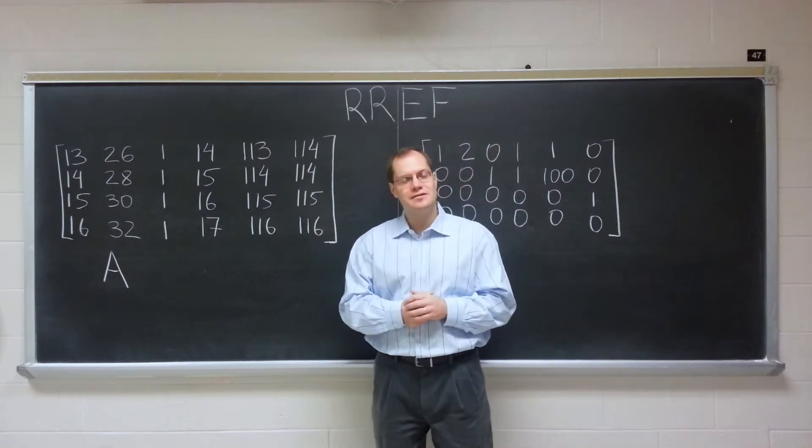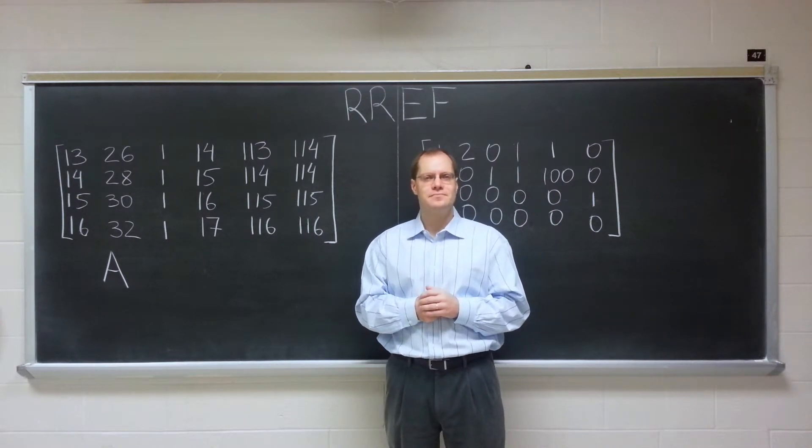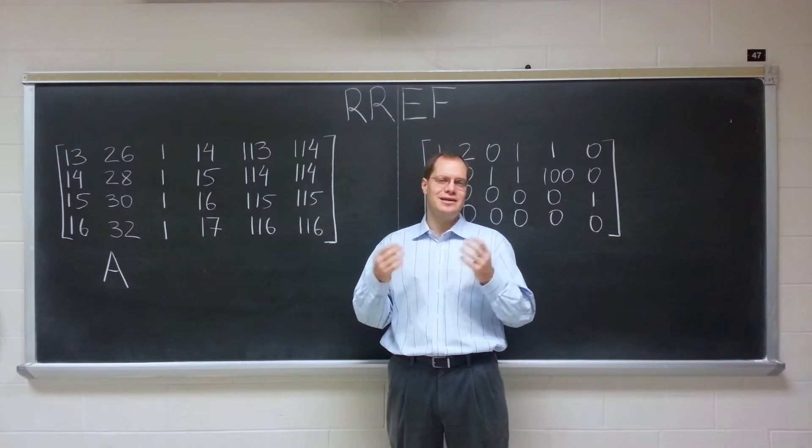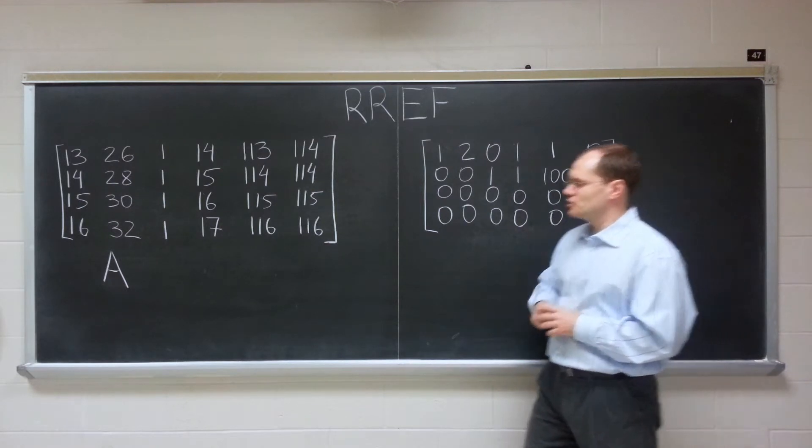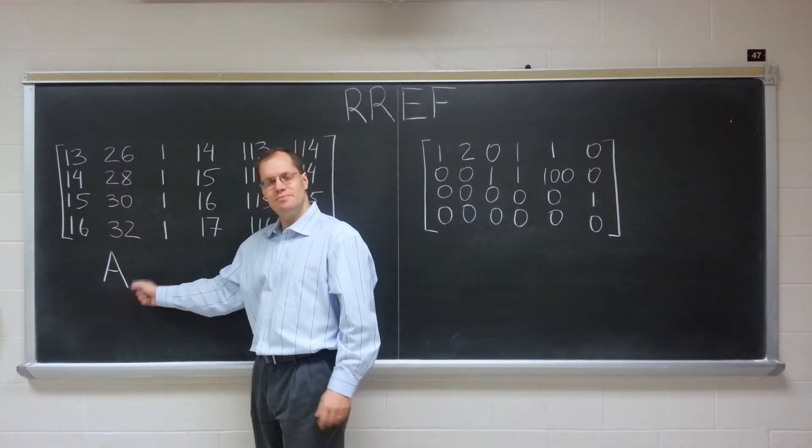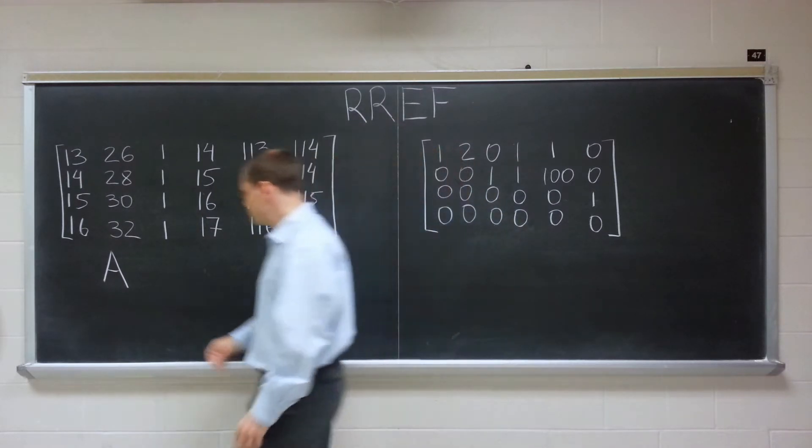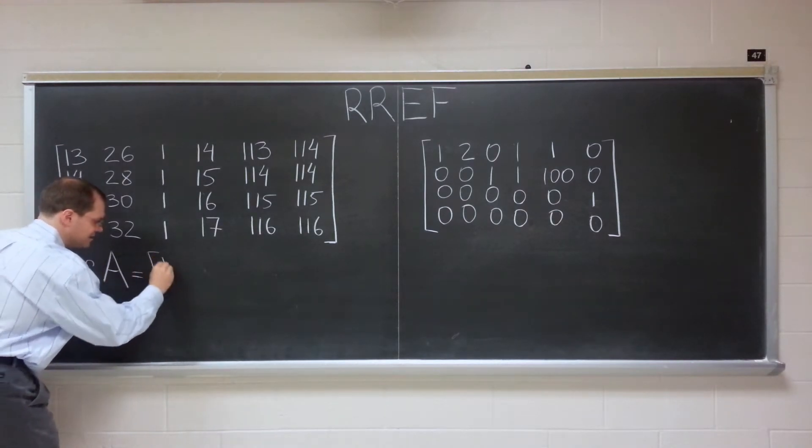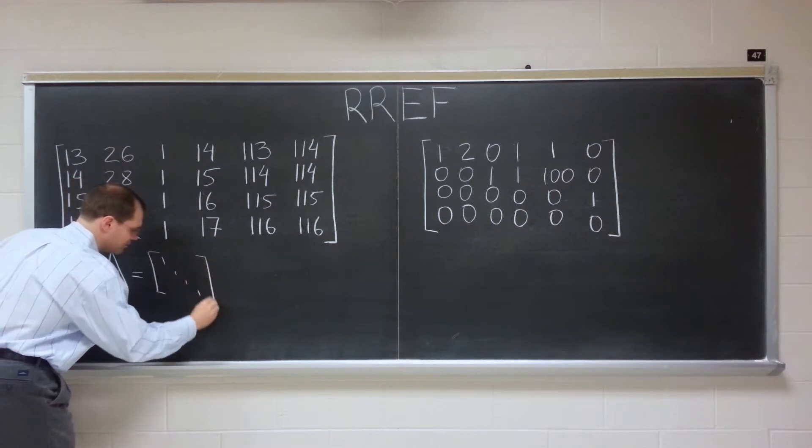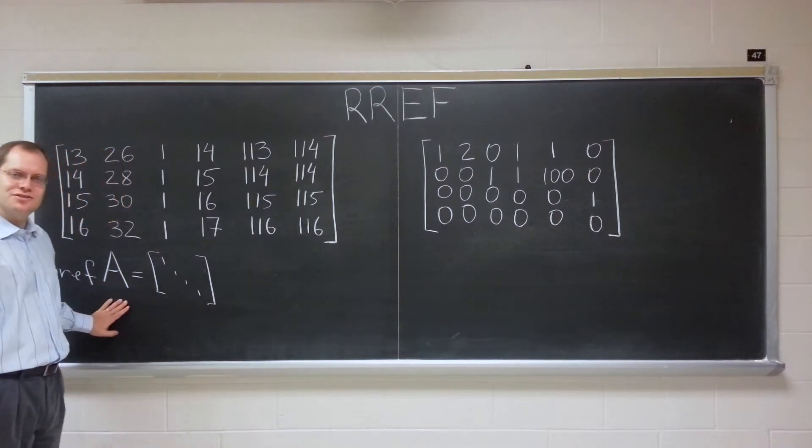Think about it for one moment or pause the video and I will reveal the answer in a moment. Well, because the columns are linearly independent, every column is a pivot column. It's linearly independent from the columns that came before it. It has to be a pivot column. Pivot columns always look like this. Therefore, the row reduced echelon form of A is the identity matrix, regardless of what A is, as long as you know that it's invertible, which is a synonym for saying its columns are linearly independent. That's question number one.